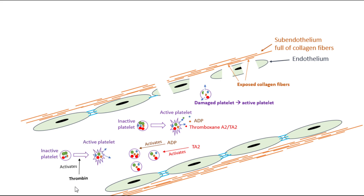Last but not least, there is an enzyme named thrombin that forms during the common pathway of coagulation — blood clot formation. Thrombin has many effects, one of which is activating platelets.